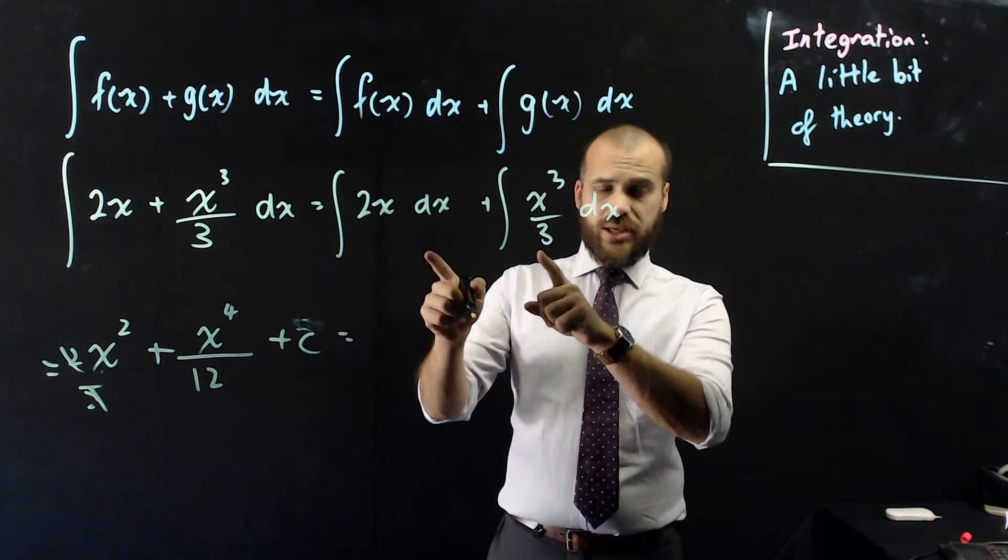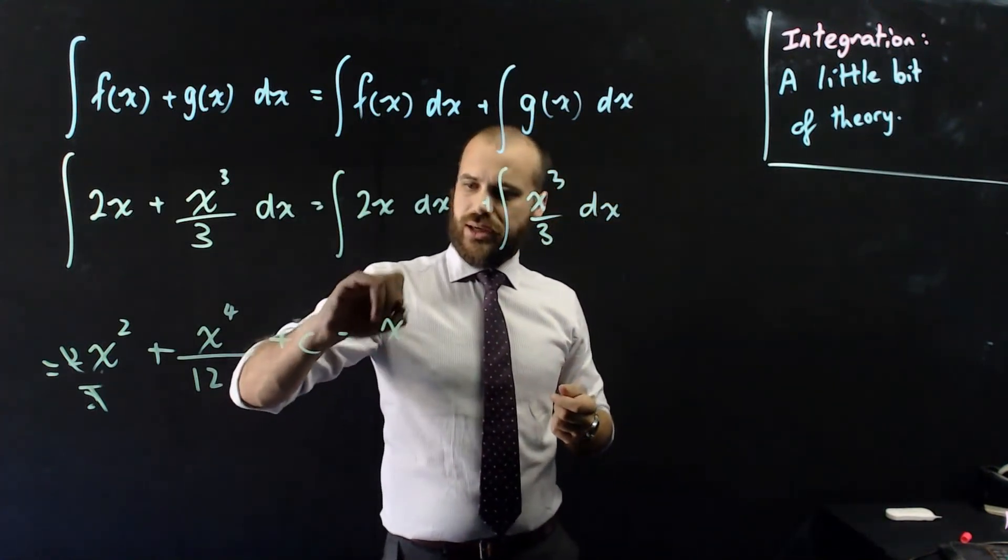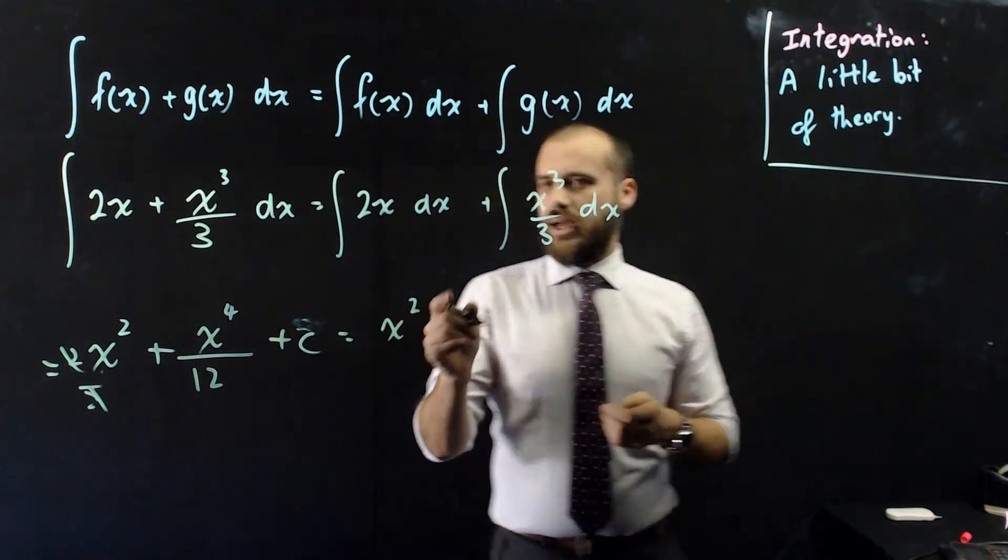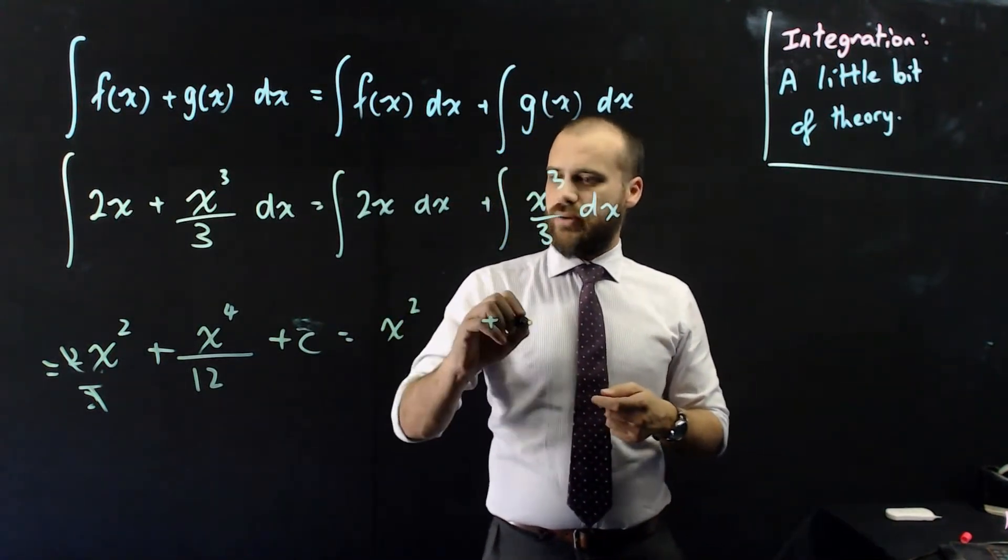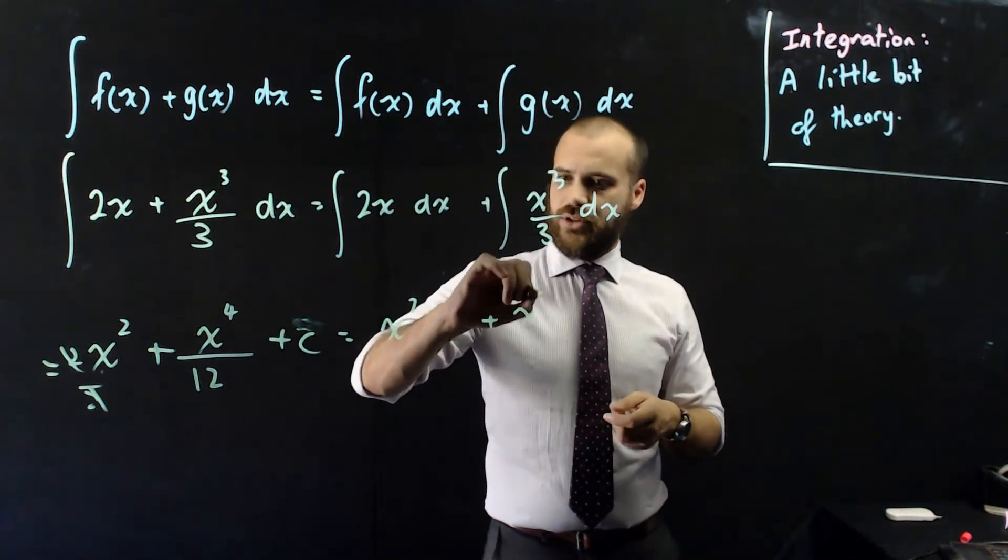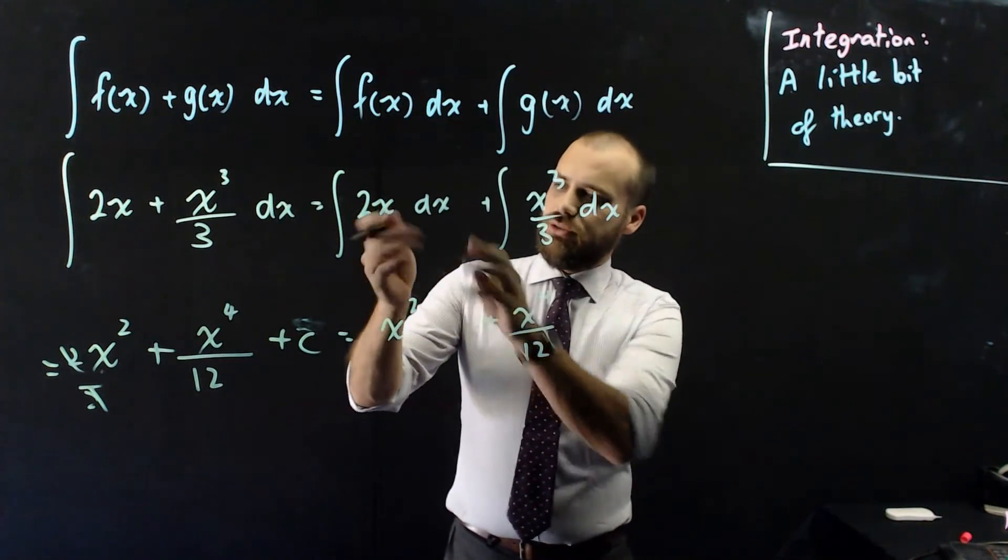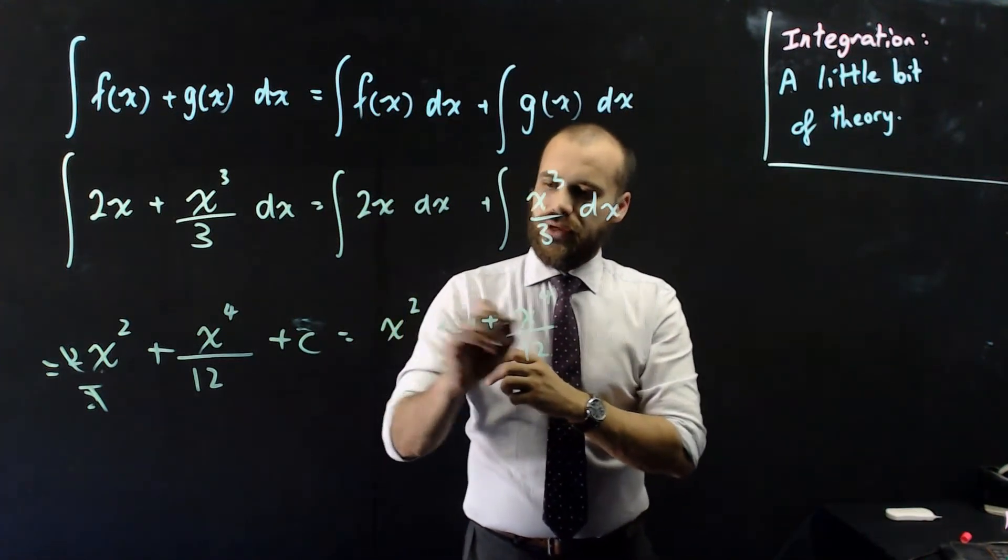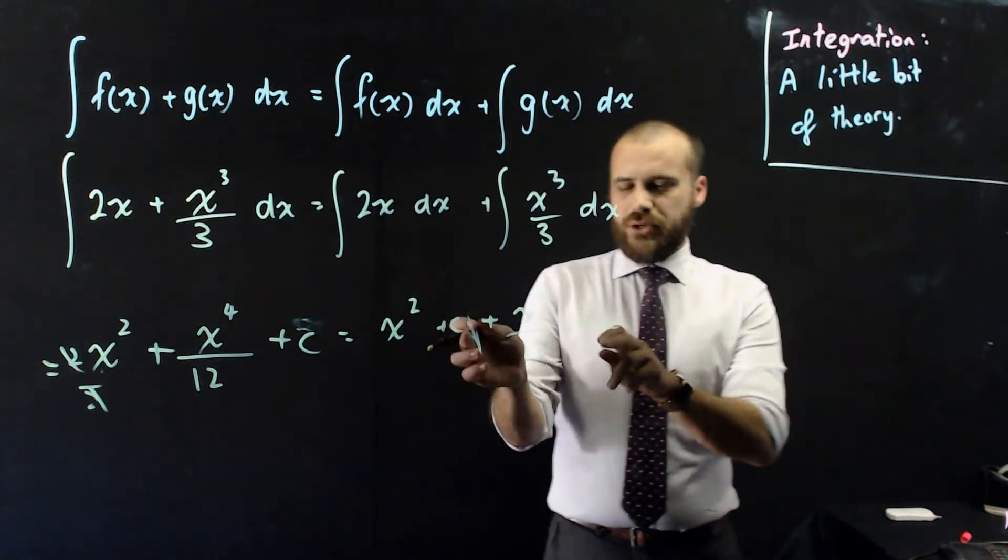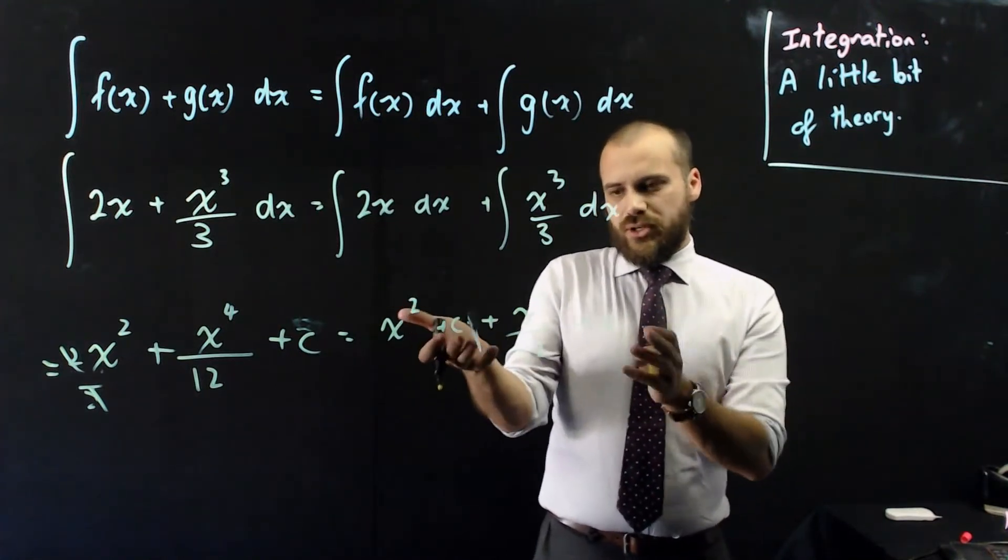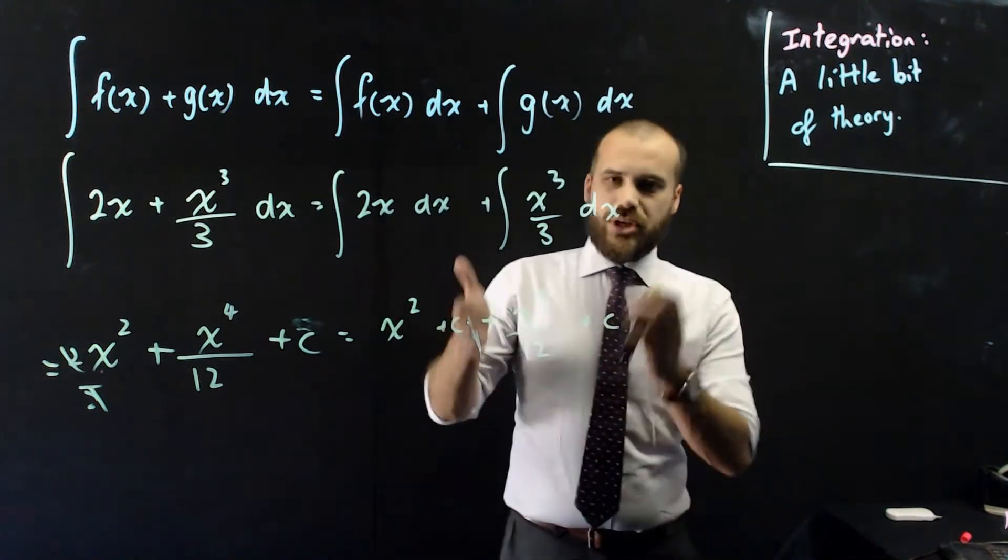Now, this bit here, if I do it the other way, I get the integral of 2x, which is x squared, and the integral of x cubed on 12, which I just told you, is x to the 4 over 12. Now, rightly, there's an integral of this, which is plus c, and there's an integral of this, which is plus c. But because they're arbitrary constants, we can kind of smoosh them together to make some other new arbitrary constant. So we don't need to have two of them.